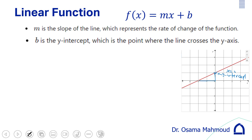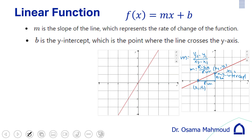M is the slope. To find the slope you use the formula rise over run — this is the rise and this is the run. Or if you have the coordinates of two points (x1, y1) and (x2, y2), you can use the formula: slope equals the difference of y over the difference of x.